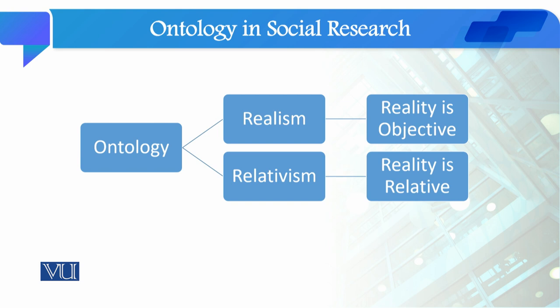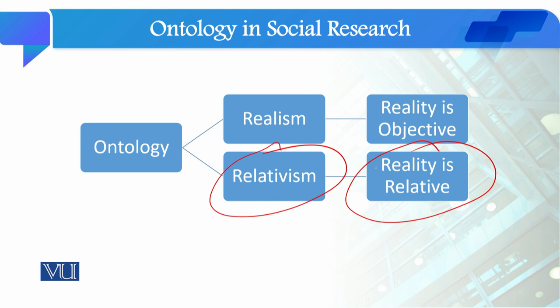In realism we say that reality is objective, reality is like a matter, and reality exists out there. In relativism we say that reality is relative, reality is a subjective phenomenon, and reality is something which is related with human experience. We cannot study reality as an objective phenomenon. So these are the ontological beliefs in social sciences.